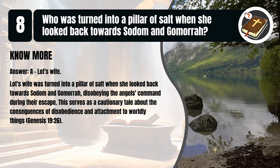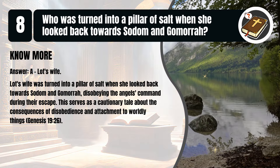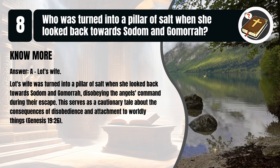That's A. Lot's wife. Lot's wife was turned into a pillar of salt when she looked back towards Sodom and Gomorrah, disobeying the angel's command during their escape. This serves as a cautionary tale about the consequences of disobedience and attachment to worldly things. Genesis, chapter 19, verse 26.